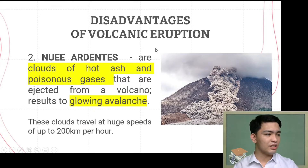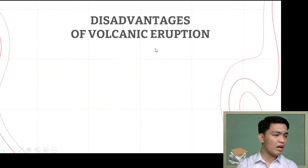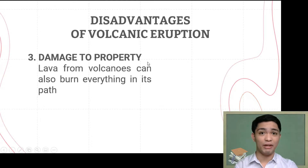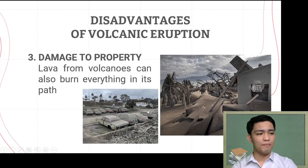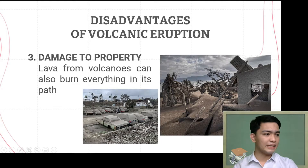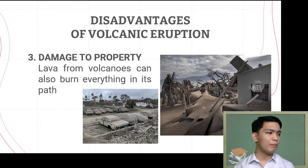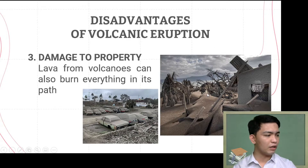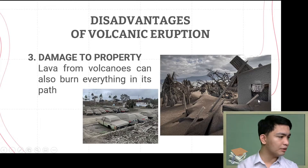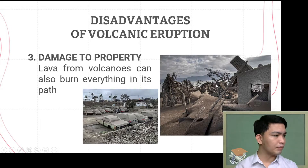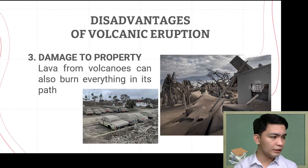That leads us to the third disadvantage: damage to property. Lava flow, lahar, and Nuée Ardente all damage properties — vehicles, structures, houses, buildings, and more in the surrounding areas of the volcano. These are some pictures of the aftermath of the Taal Volcano eruption last year — damaged houses, plants, trees nearby, vehicles, all covered in ash.